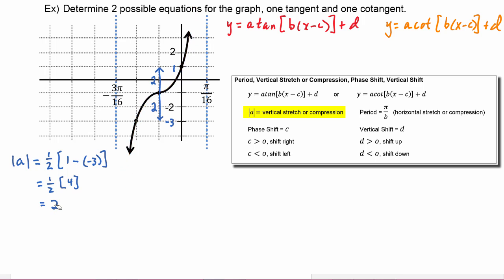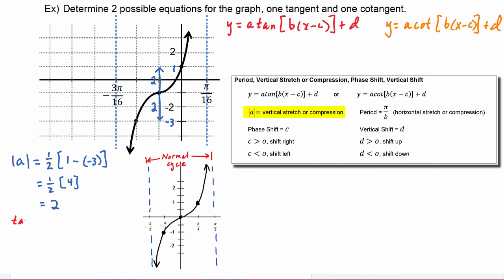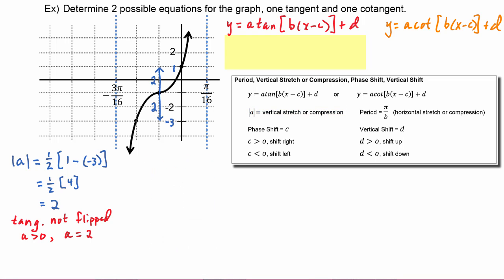We have to decide if a is positive or negative. For the tangent graph, we see that this is going in the same direction as the unaltered tangent — so it's not flipped — which means a has to be positive. So a is going to equal two. Let's go up and start writing our tangent graph: y is equal to two times the tangent of the quantity...